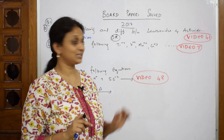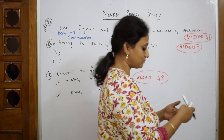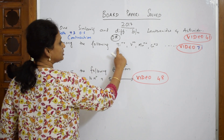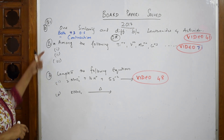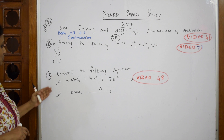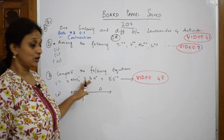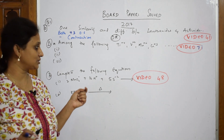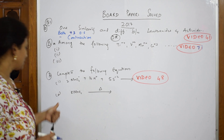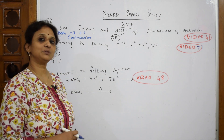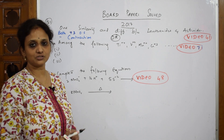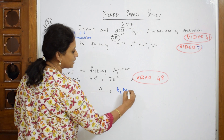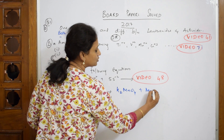Among the following — this question I have done clearly in video number 7; please go and watch that. Now let us come to Part B. For the oxidizing property of KMnO4, I have shown how to convert hydrogen sulfide to sulfur and the complete ionic reaction — please watch video number 48 for that. Now, KMnO4 on heating: when you heat the purple-colored KMnO4 in solution, it is going to dissociate into three important compounds: K2MnO4, MnO2, and oxygen.